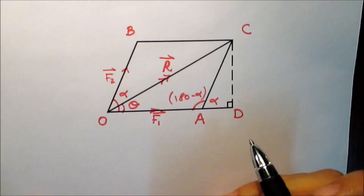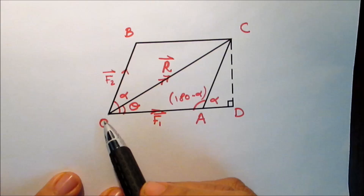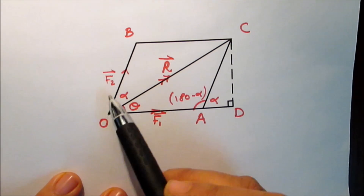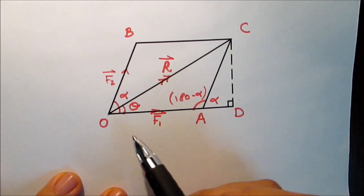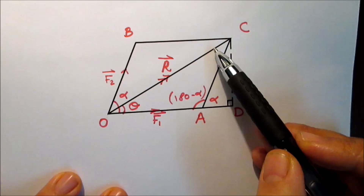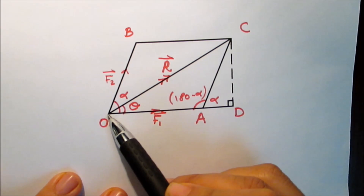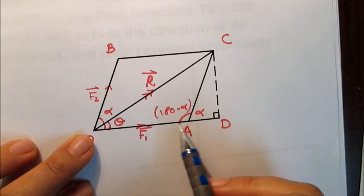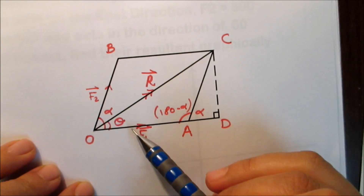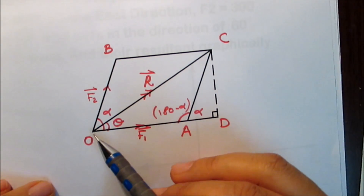To understand the parallelogram rule for adding two forces: if two forces F1 and F2 meeting at a point O are represented in magnitude and direction by the two sides of a parallelogram OACB meeting at that point, then the resultant is represented in magnitude and direction by the diagonal of the parallelogram that meets the two sides at that point. So if two forces F1 and F2 are represented by the two sides of a parallelogram, the resultant is represented by the diagonal.